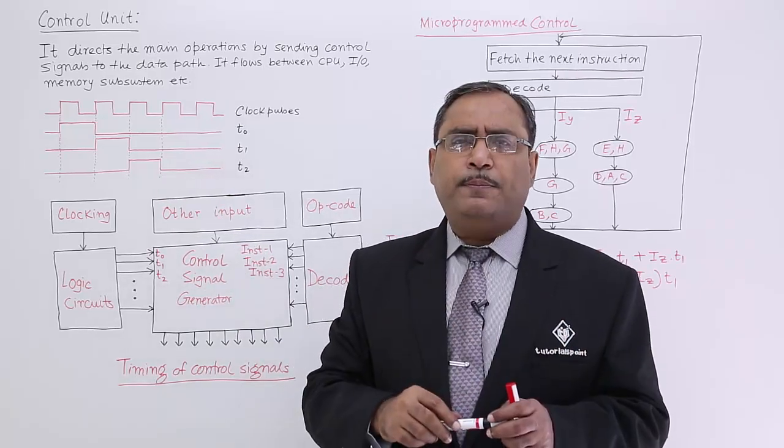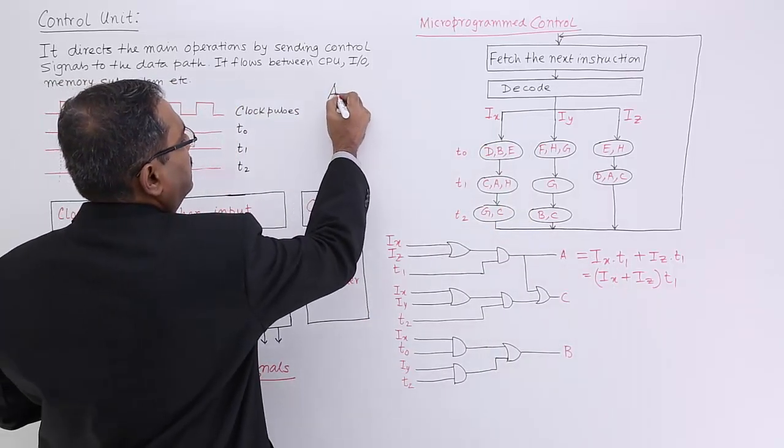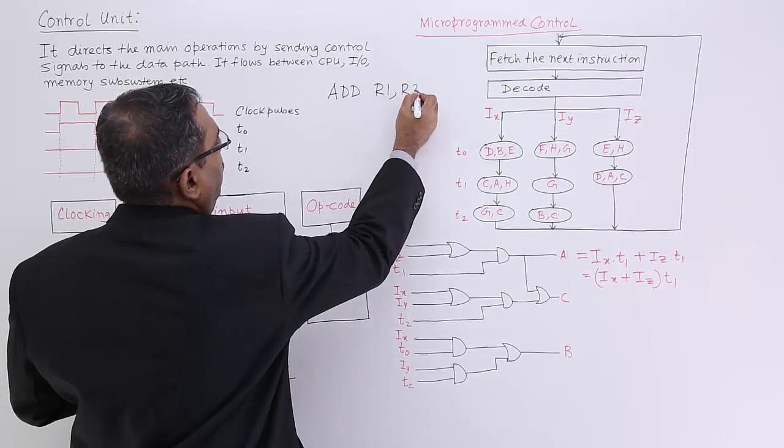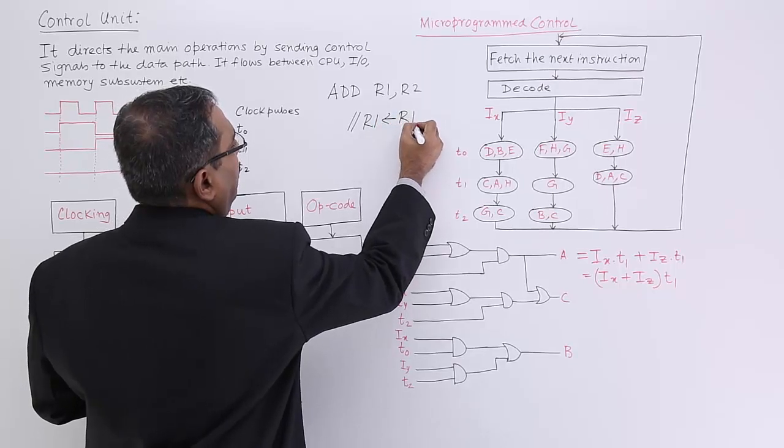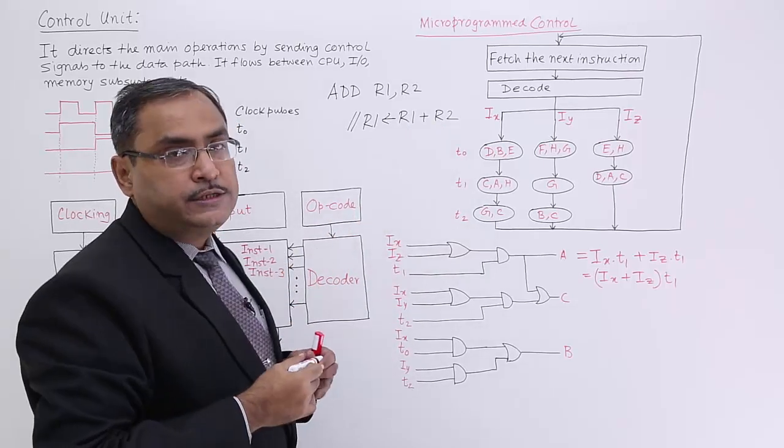For a very simple example I can tell in this way: let us suppose there is one instruction called add R1 R2. What does it mean? R1 will get initialized by the current content of R1 plus the current content of the register R2.